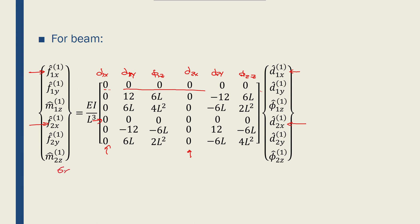So, I have a 6 by 1 nodal local forces, 6 by 1 local nodal displacement vector. So, I have a 6 by 6 local stiffness matrix for a frame element. Perfect.